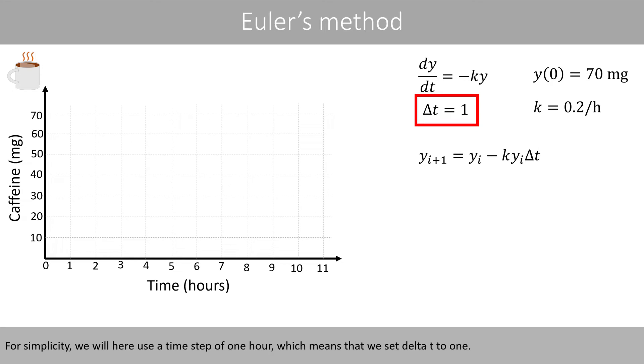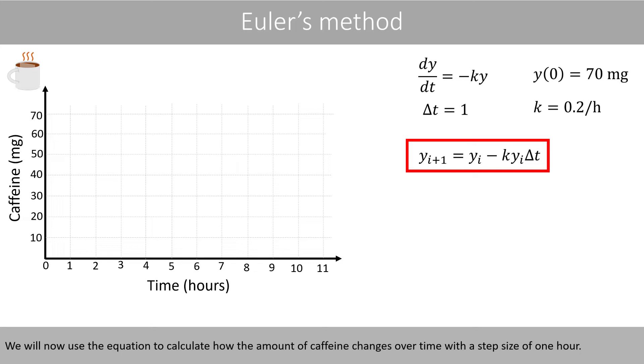For simplicity, we will here use a time step of 1 hour, which means that we set Δt to 1. We will now use this equation to calculate how the amount of caffeine changes over time, with a time step of 1 hour.